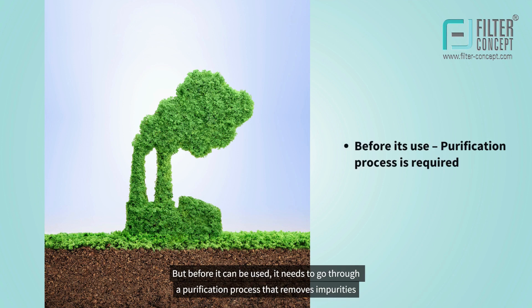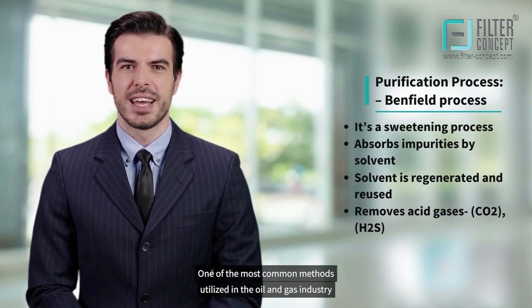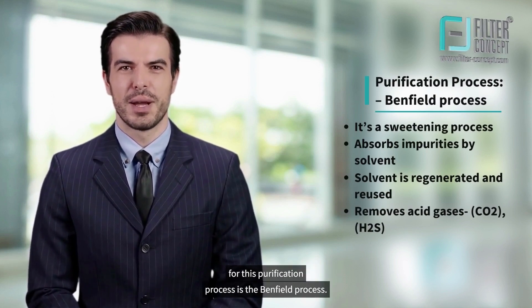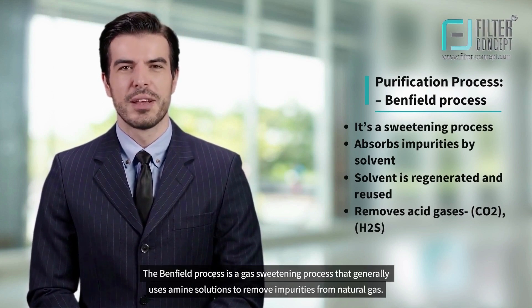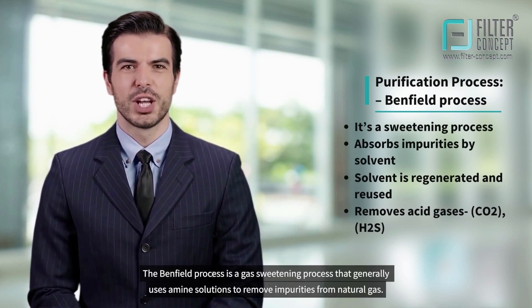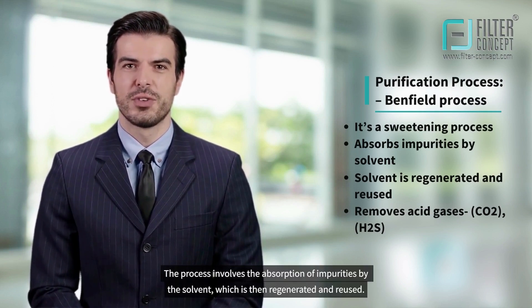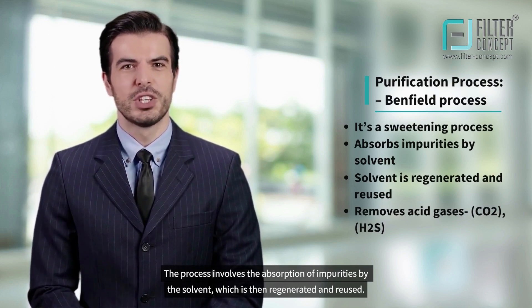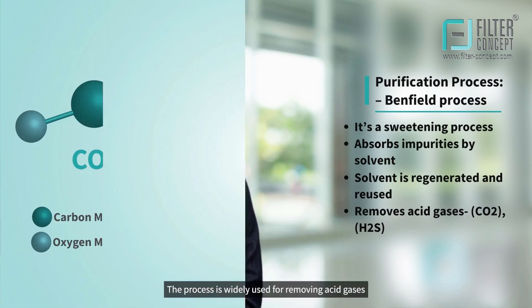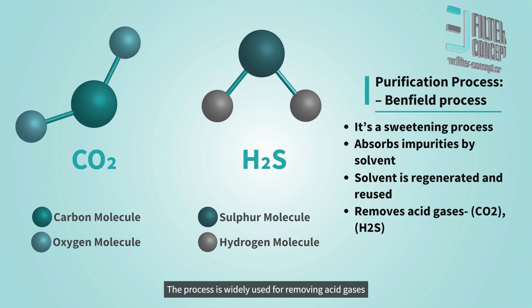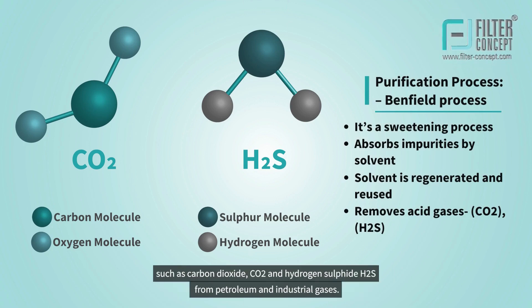But before it can be used, natural gas needs to go through a purification process that removes impurities such as carbon dioxide, hydrogen sulfide, and other contaminants. One of the most common methods utilized in the oil and gas industry for this purification process is the Benfield process. The Benfield process is a gas sweetening process that generally uses amine solutions to remove impurities from natural gas. The process is widely used for removing acid gases such as carbon dioxide (CO2) and hydrogen sulfide (H2S) from petroleum and industrial gases.